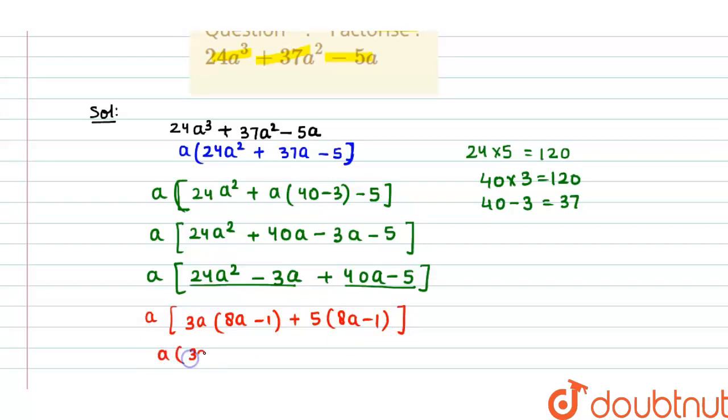So we can write it 3a + 5 in one bracket and 8a - 1 in one bracket. So this is the factor of the given equation: a(3a + 5)(8a - 1).